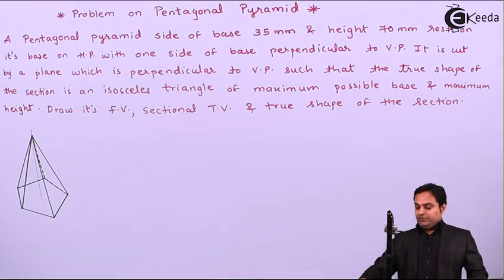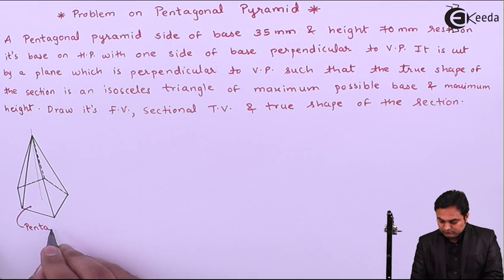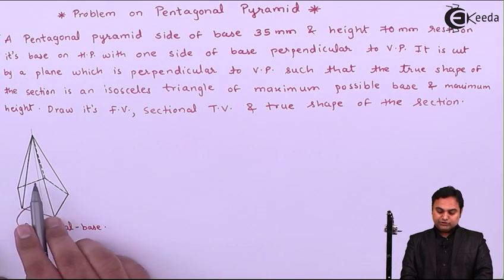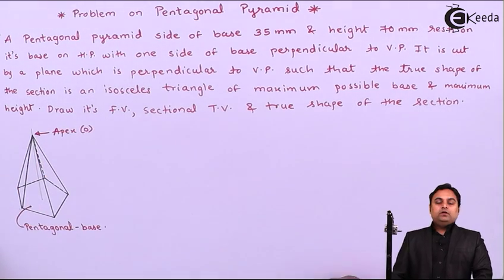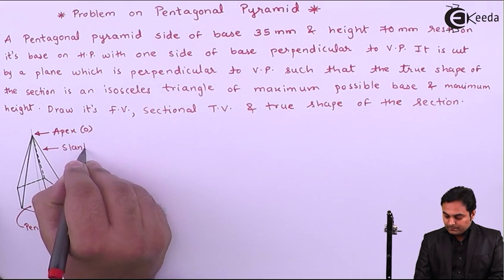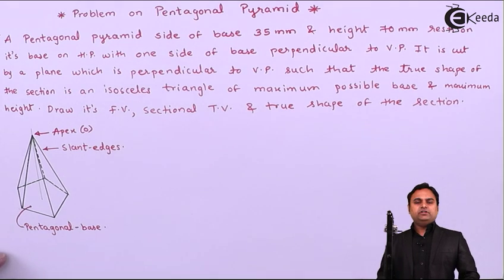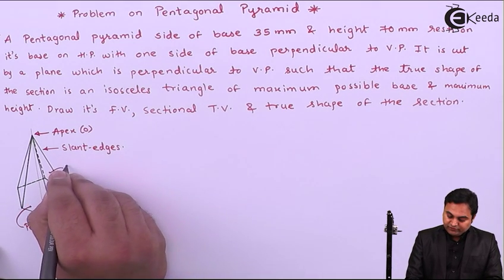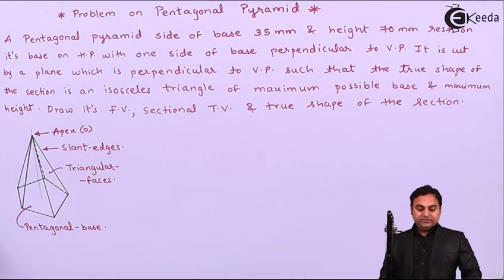Here is the diagram of a pentagonal pyramid in which we have a pentagonal base. There are five corners of the base connected to a common apex. The corners are connected to the apex with the help of slant edges. Since this is a pentagonal pyramid, there will be five slant edges forming five triangular faces.